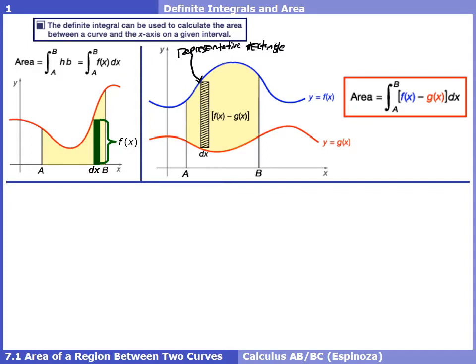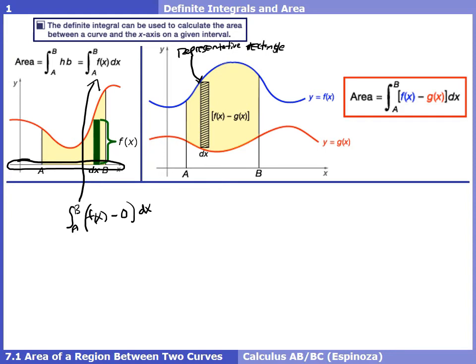Really, not much of a difference from what we've done since Chapter 4. When we set up the integral from A to B of F(x) dx, we were actually subtracting away a bottom bound. The bottom function was our x-axis, or a y-value of 0. So we've actually been using this idea of finding the area between two curves since Chapter 4 — it's just that back then our bottom function was 0, so we didn't need to write minus 0. Now our x-axis isn't the bottom, so we do need to subtract some other function.